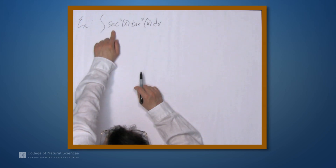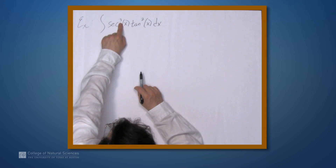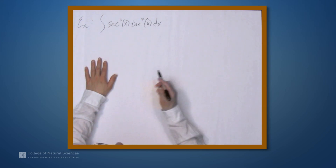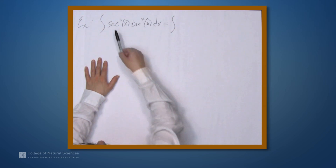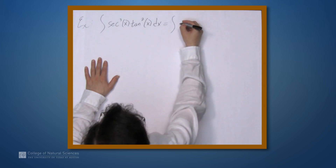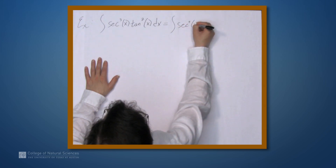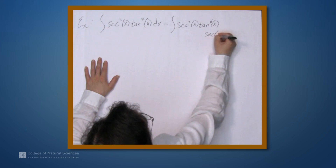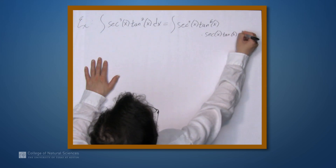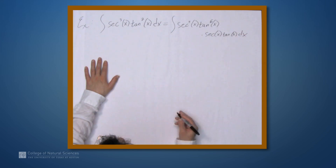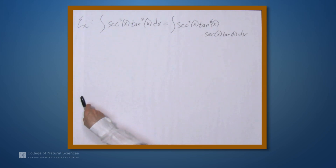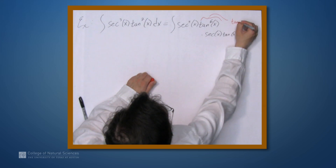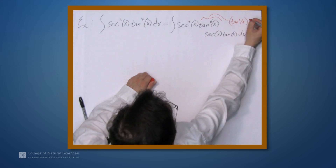That leaves us with sec²x · tan⁶x · (secx · tanx) dx, where secx · tanx is the derivative of secant. Now tan⁶x equals (tan²x)³.